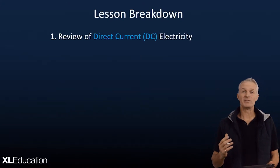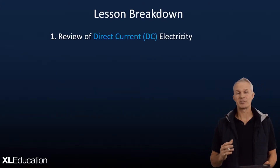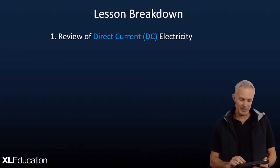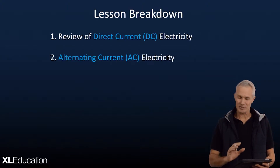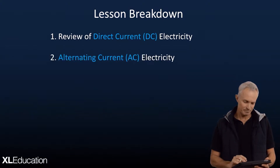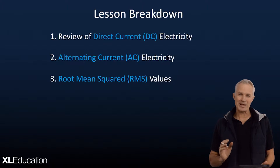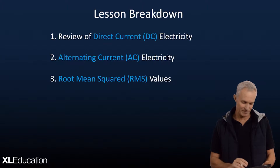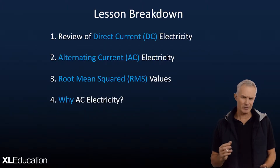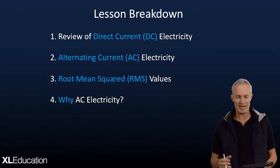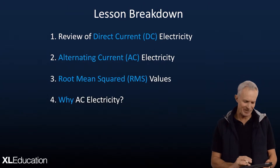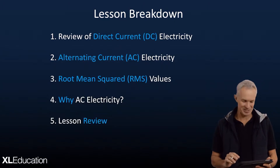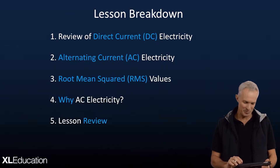In our lesson today we're going to first review DC, which is direct current. Then we're going to get into AC and see the difference between the two. Then we look at the mathematical side of AC and we use something called RMS values — root mean squared values. Then we're going to understand why we even bother with AC when DC seems much easier, and then we'll wrap it up.